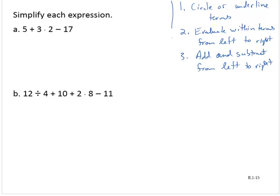So let's keep that in mind and follow this agreement. The first thing we'll do is circle or underline terms. So we actually did this in the previous example. 5 is a term. 3 times 2 is a term. 17 is a term.